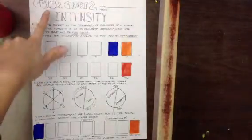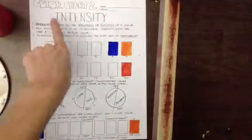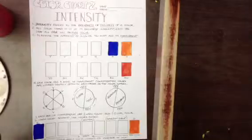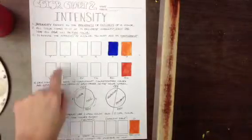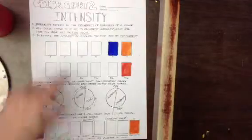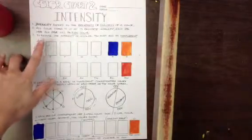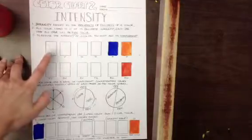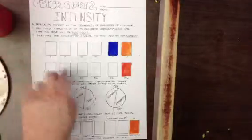Color chart two is all about intensity. Remember that intensity refers to the brightness or dullness of a color and we've talked about this before last semester. So what we're doing here is just some pairings so that we remember how to keep a color really intense or if we want to dull it down really quickly we add its complementary color to it.